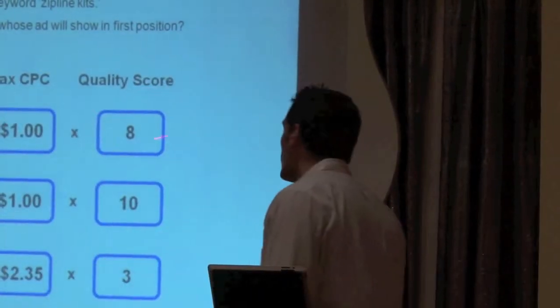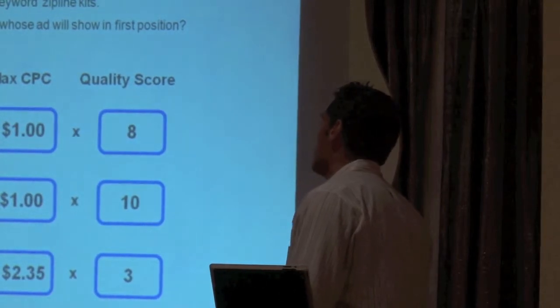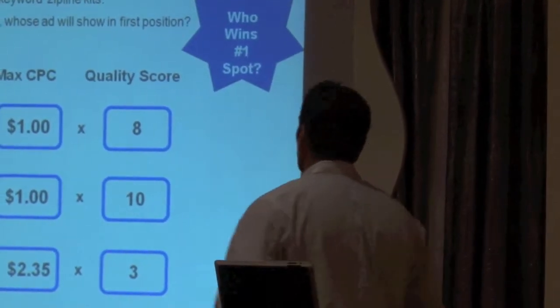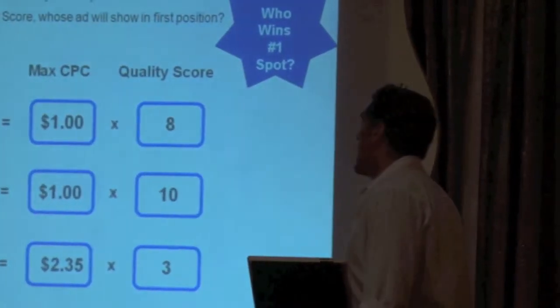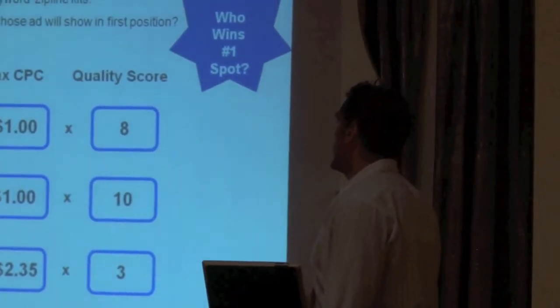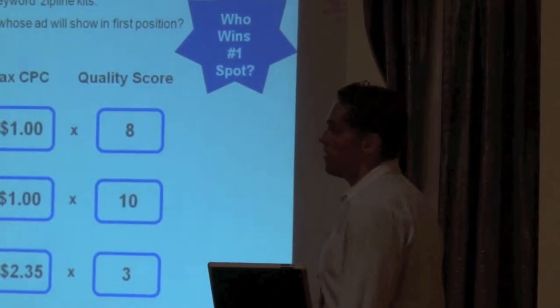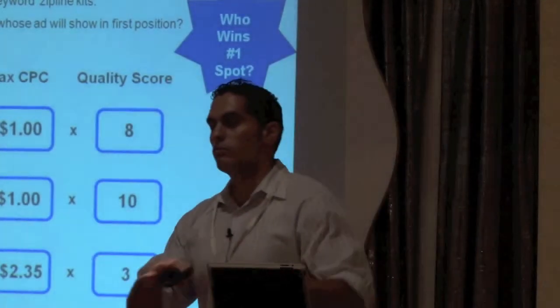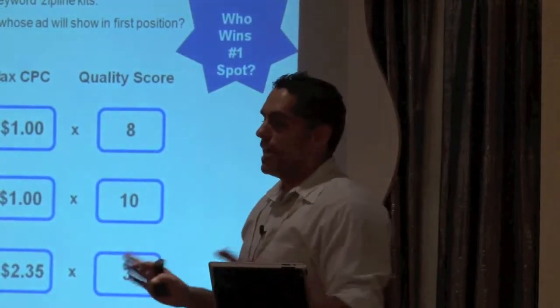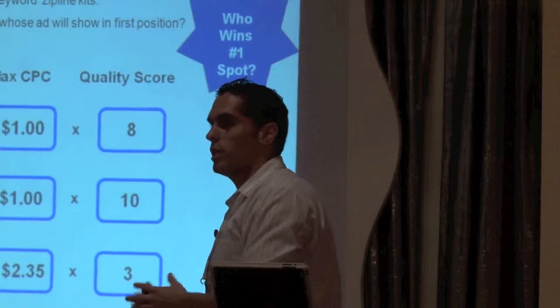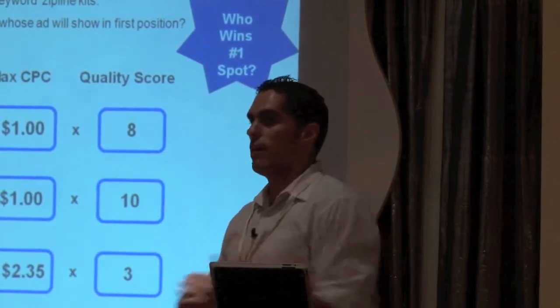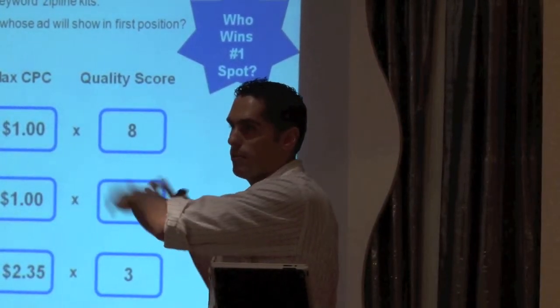So the whole idea is you take your quality score, multiply it by your max cost per click, and that's going to be your ad rank. So Allison has an ad rank of 8, Scott has an ad rank of 10, and John has an ad rank of 7. Now, the higher your number, the lower your number will be. It's a little confusing, but essentially, in order to show up in the first spot, you need to have a higher ad rank. Does that make sense?